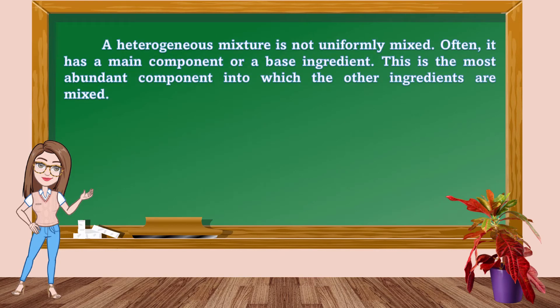A heterogeneous mixture is not uniformly mixed. Often, it has a main component or a base ingredient — this is the most abundant component into which the other ingredients are mixed. Some examples of heterogeneous mixtures are mixed nuts.